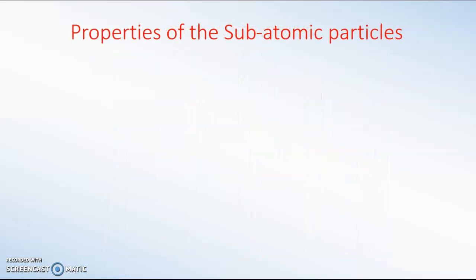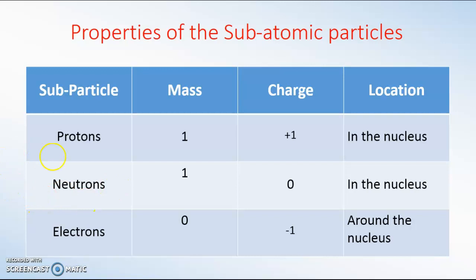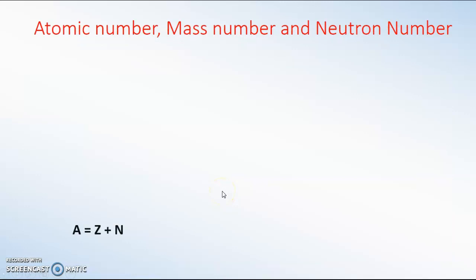Now let's look at the properties of the subatomic particles. Protons have a mass of 1 and a charge of +1, and are found in the nucleus. Neutrons have a mass of 1, no charge, and are also found in the nucleus. Electrons have a mass of almost zero — approximately 1/1840 — so we usually say zero, with a charge of −1, and are found around the nucleus.